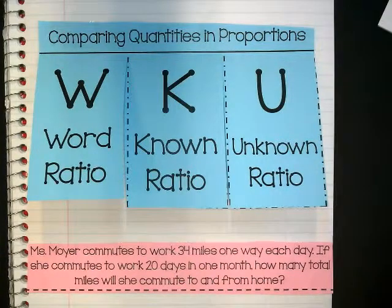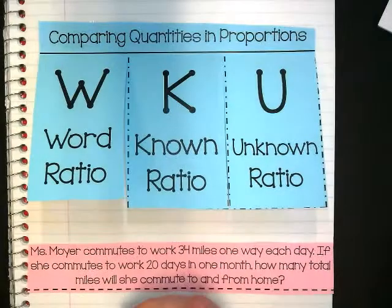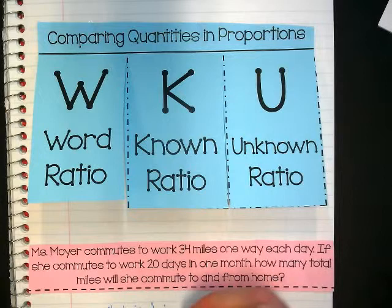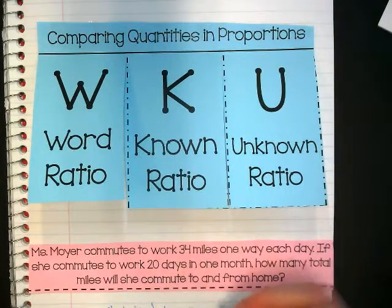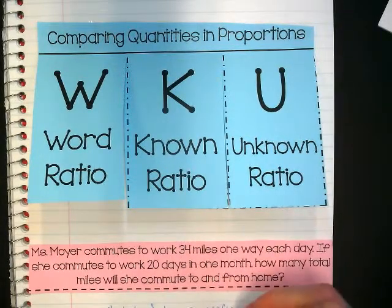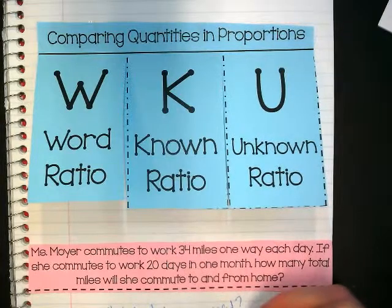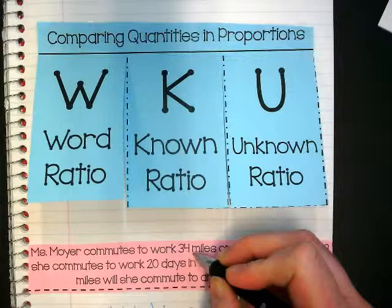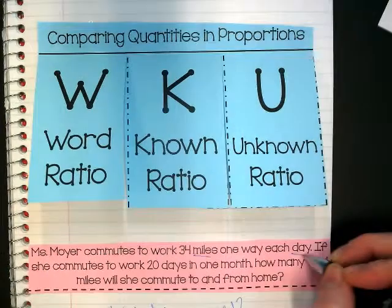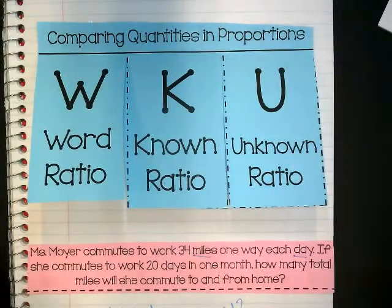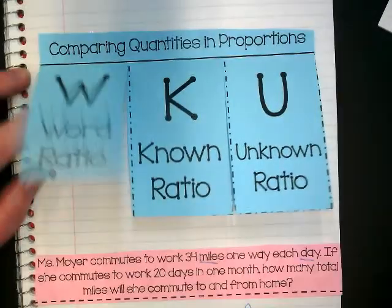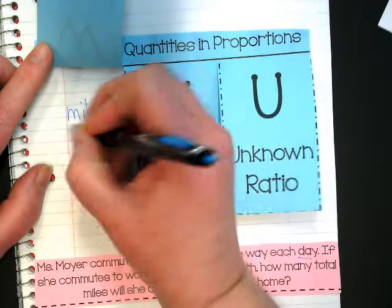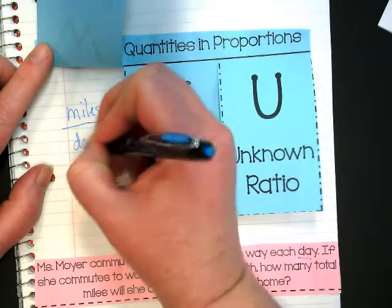Well, to fill out our word ratio, we have to ask ourselves this question. What is being compared? And when I'm looking at the comparisons in this word problem, I have miles and I have days. Those are the two things being compared. So for my word ratio, I'm going to make it be miles over days.